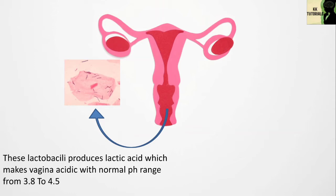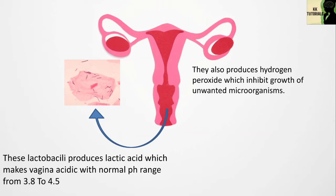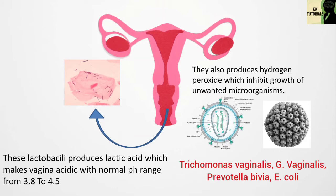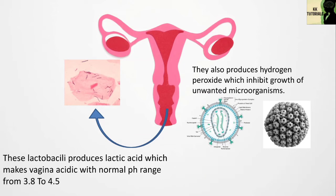These lactobacilli also produce hydrogen peroxide which inhibits the growth of unwanted microorganisms. Hydrogen peroxide producing lactobacilli have been shown to inactivate HIV-1, herpes simplex virus type 2 (HSV-2), Trichomonas vaginalis, Gardnerella vaginalis, Prevotella bivia, and Escherichia coli. So basically, these normal flora of the vagina maintain an acidic environment by production of lactic acid, thus preventing many types of infections — bacterial or fungal.